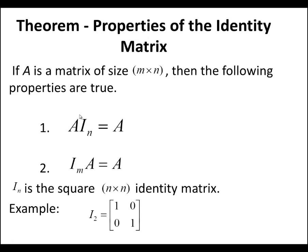Theorem: Properties of the Identity Matrix. If A is a matrix of size m by n, then: (1) A times I_n equals A; (2) I_m times A equals A. Remember, A has size m by n, so multiplying I_n on the right requires it to be n by n, and multiplying the identity matrix on the left requires it to be m by m. I_n is the square n by n matrix; for example, I_2 is [[1, 0], [0, 1]], with all main diagonal elements equal to 1 and 0 elsewhere.